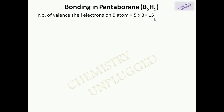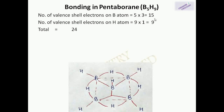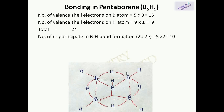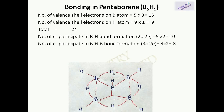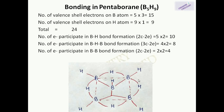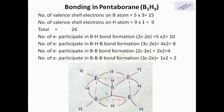The next example is pentaborane B₅H₉. The number of valence electrons from 5 boron atoms is 15, and from 9 hydrogen atoms is 9, giving a total of 24. There are 5 BH terminal bonds (2-center 2-electron) using 10 electrons, 4 BHB banana bonds (3-center 2-electron) using 8 electrons, 2 BB bonds (2-center 2-electron) using 4 electrons, and 1 BBB bond — a 3-center 2-electron electron-deficient bond using 2 electrons. All electrons are accounted for.